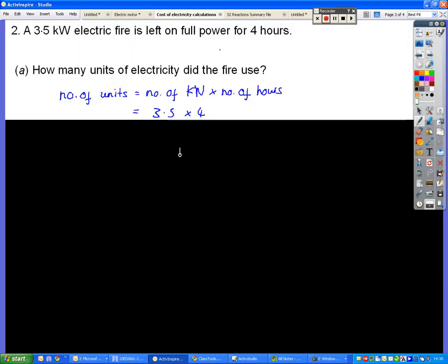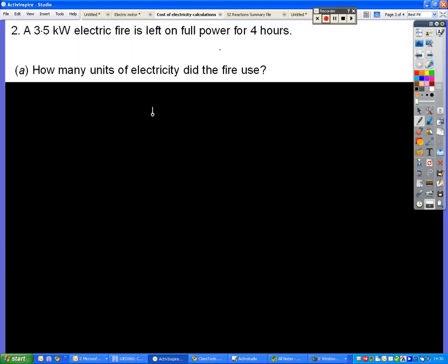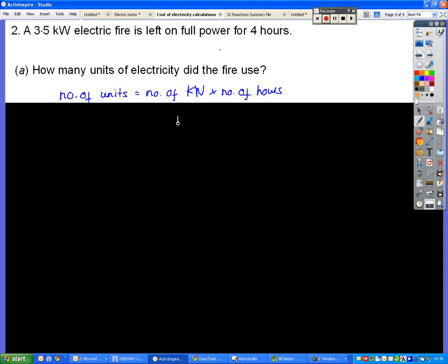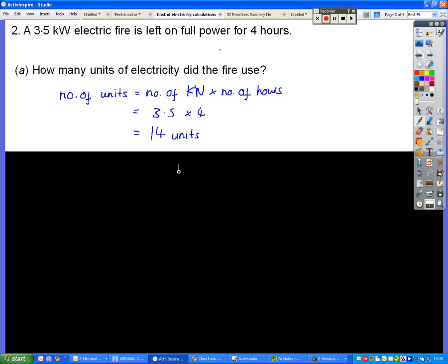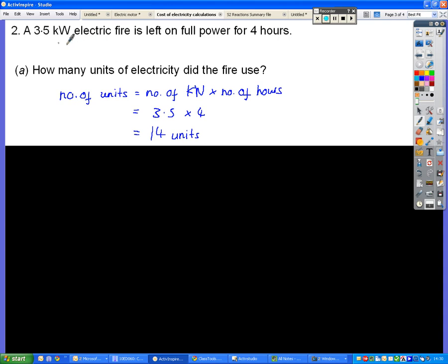You can also get an example where you're not only asked how many units it uses but how much those units would have cost to use. So same equation again, 3.5 times 4, 14 units of electricity used for this particular situation. So 14 units, 14 kilowatt hours.